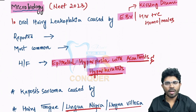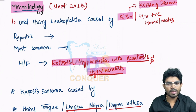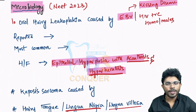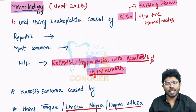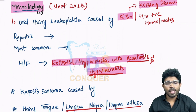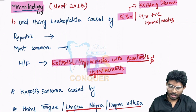Apart from this, EBV is going to cause kissing disease, also called glandular fever. The diagnostic tests for the kissing disease are the monospot test as well as the Paul-Bunnell test.